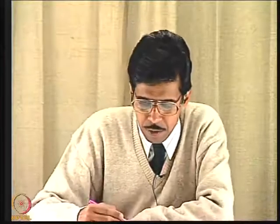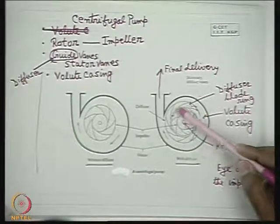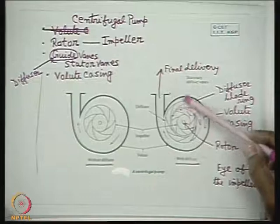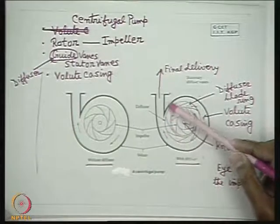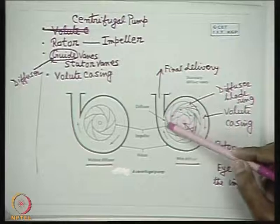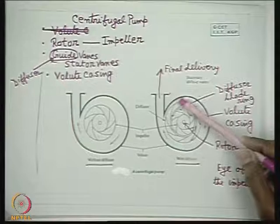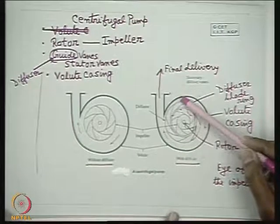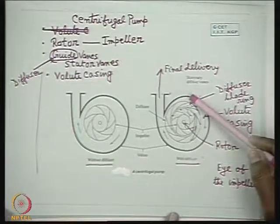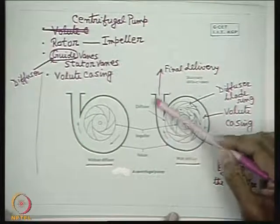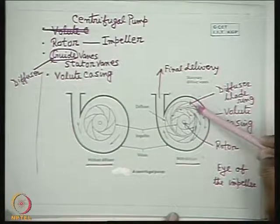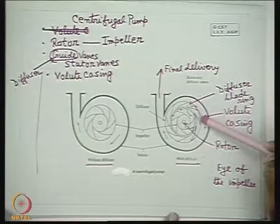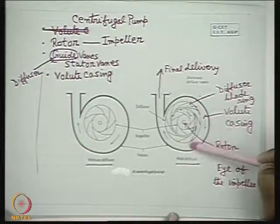Looking at the different components of a pump, we see the pump impeller. After the impeller there are two types of diffusers. One is the vane diffuser, where a number of static vanes form a diverging passage — as the fluid flows through this passage, its pressure is increased while velocity is decreased. After the vane diffuser, the fluid enters the volute casing or spiral casing, where the cross-sectional area increases in the direction of flow, causing an additional conversion from kinetic energy to pressure energy.